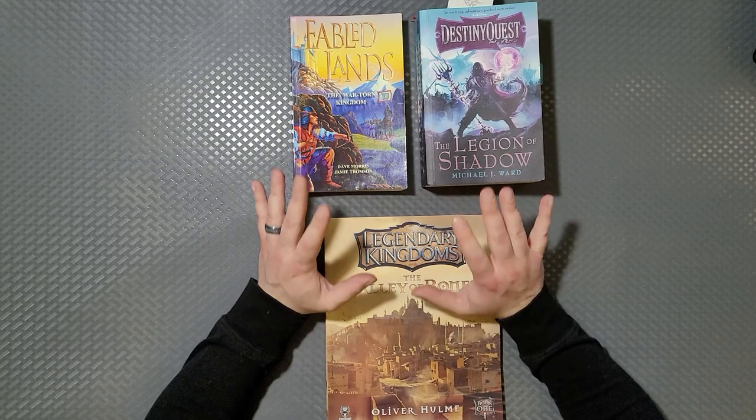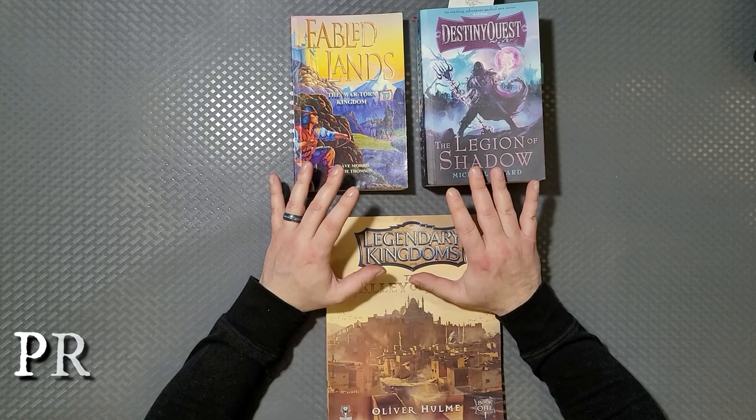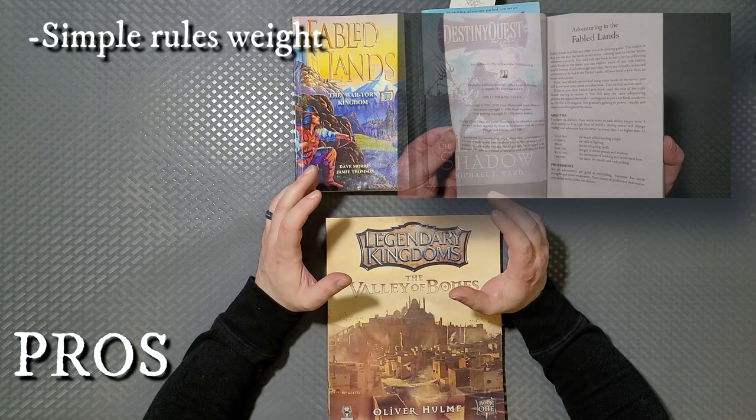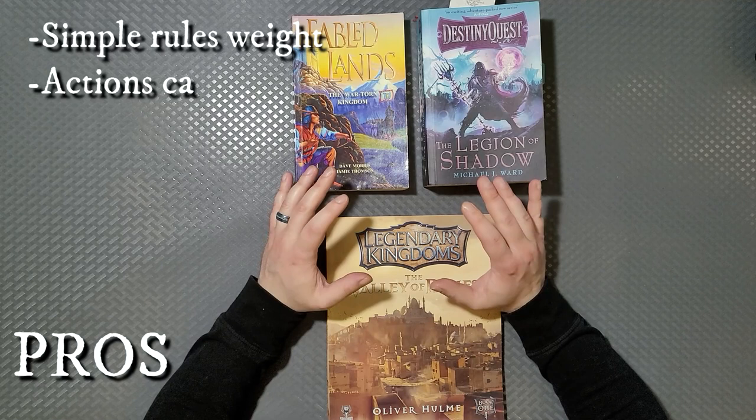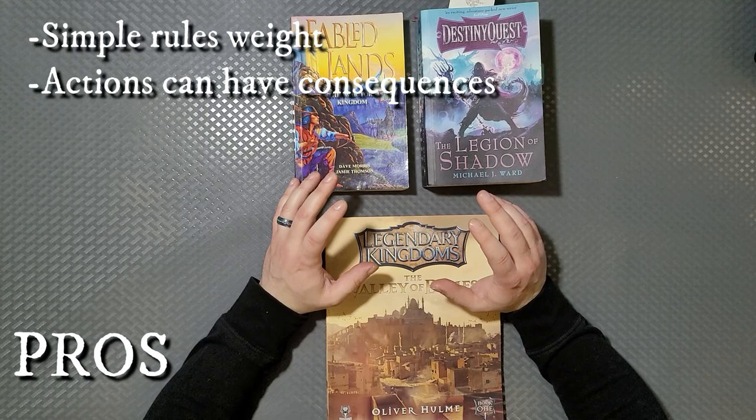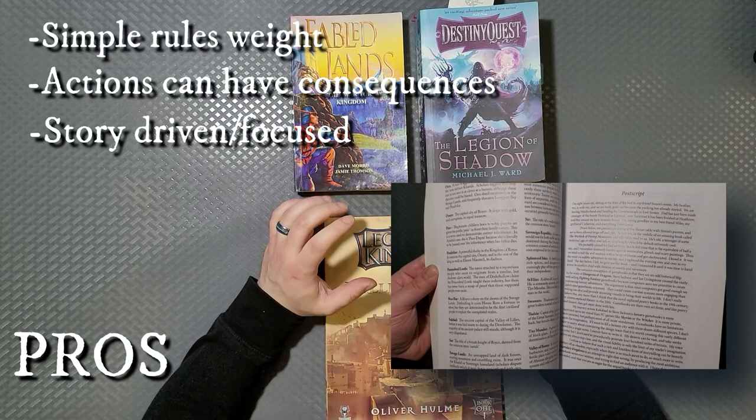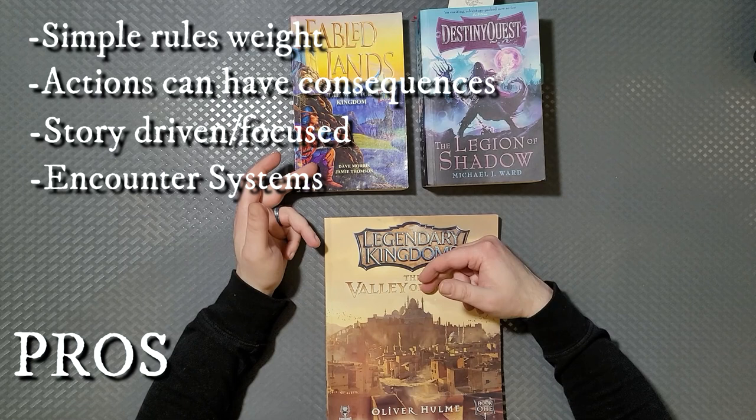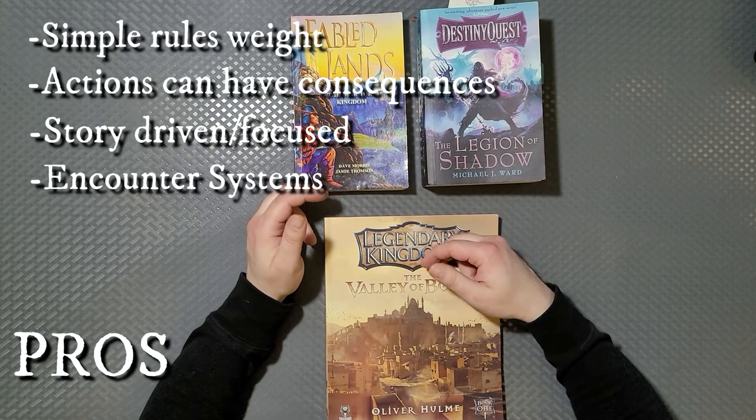But the pros of these are that they're going to have kind of a simple rules weight. It's not going to be rules heavy at all. You can pick up the rules probably in about five or ten minutes. You can teach them at an even shorter interval, probably two to three minutes. Actions typically can have consequences within the book that you're reading. They're almost always very story-driven. So if you like a narrative, this is probably going to be almost your best bet here. Some will even have encounter systems. Both of these have encounter systems built in so that as you go through the book and maybe you return to some of the same areas that you've been to before, you have a chance of discovering something.